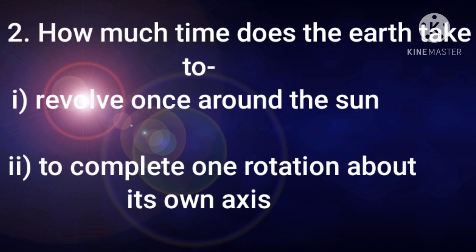Second is, how much time does the Earth take to, first part is, revolve once around the sun? Answer is, nearly 365 days. Second, to complete one rotation about its own axis. And the answer is, 24 hours.